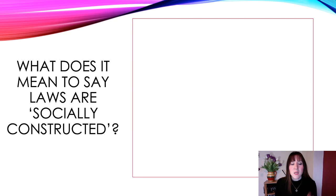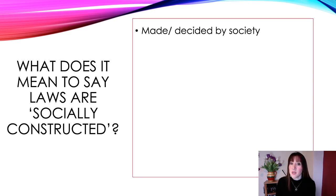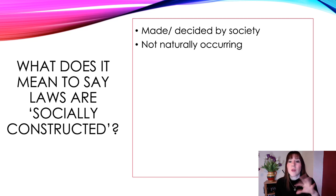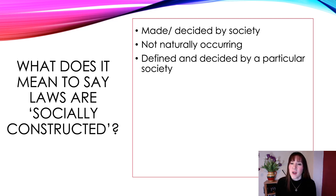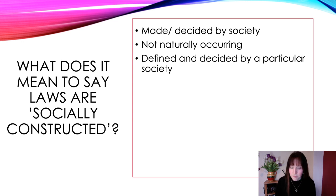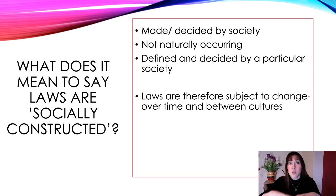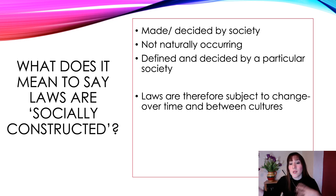What does it mean to say that laws are socially constructed? It means they're made and decided by society — the society that you live in. They are not naturally occurring; they don't occur without human interaction. They are defined and decided by a particular society, so they remain within that society. Laws are therefore subject to change over time and between cultures — they will change over time within a culture, but also different societies and cultures will have different laws.